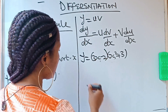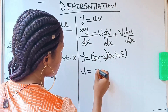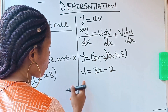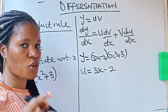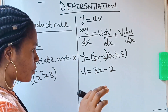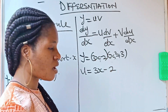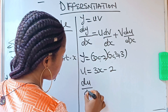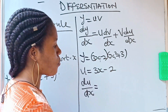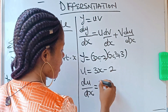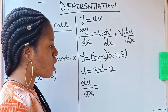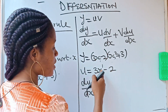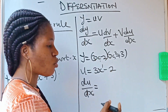We have to start with u first. Your u is 3x minus 2. Now differentiate that u. This 3x is seen as 3x raised to the power of 1 — the 1 is removed because x raised to the power of 1 is just x. So there's no need to write that 1, but you should know there is an invisible 1 there because it's very important.